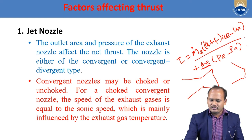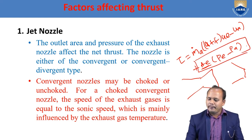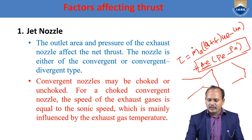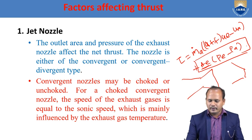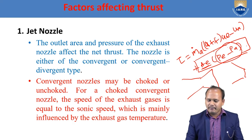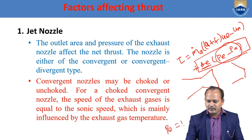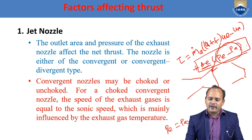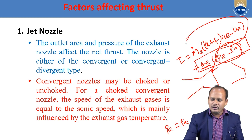In terms of pressure thrust, it depends on the pressure difference at the nozzle exit as well as the area of the nozzle. If the nozzle area is larger, the pressure thrust component will be more. Similarly, if the pressure difference between exit flow and ambient flow is greater, the pressure thrust component will also be more. Before the nozzle is choked, pₑ will equal pₐ, so there will be no pressure thrust component at all — all thrust will come solely from momentum.